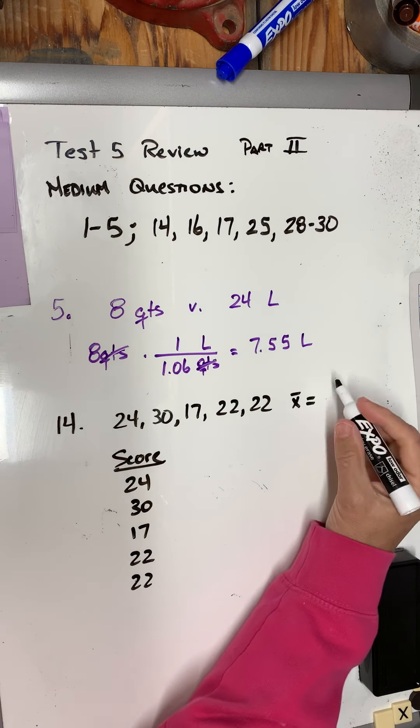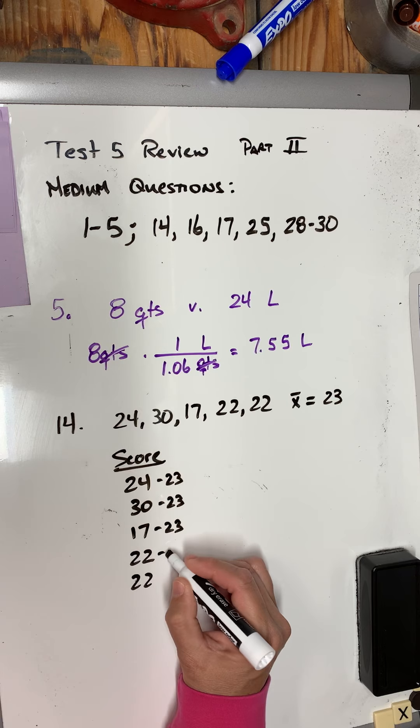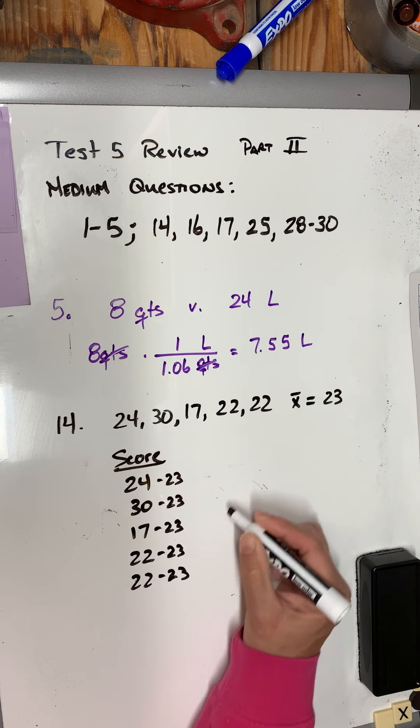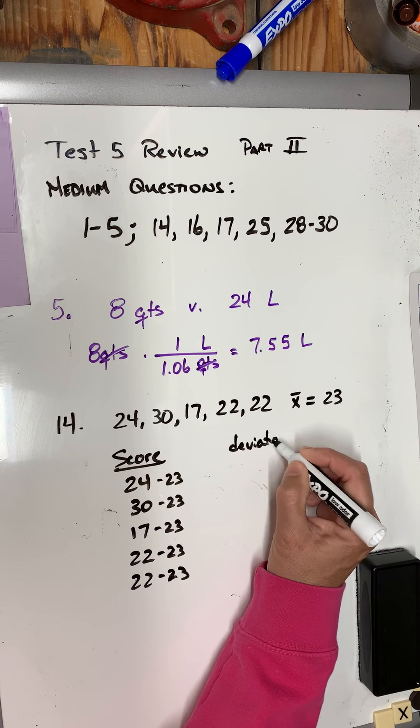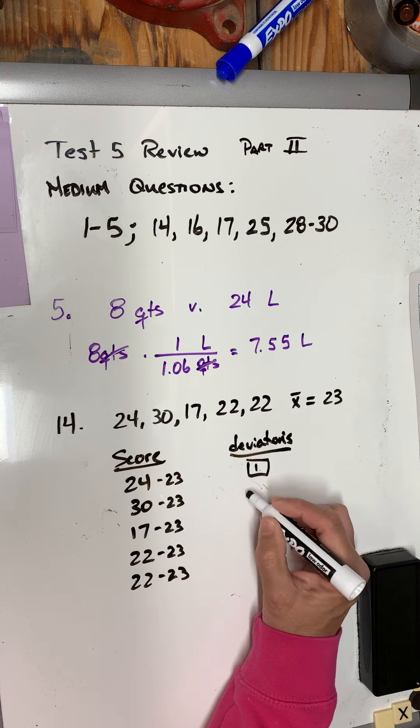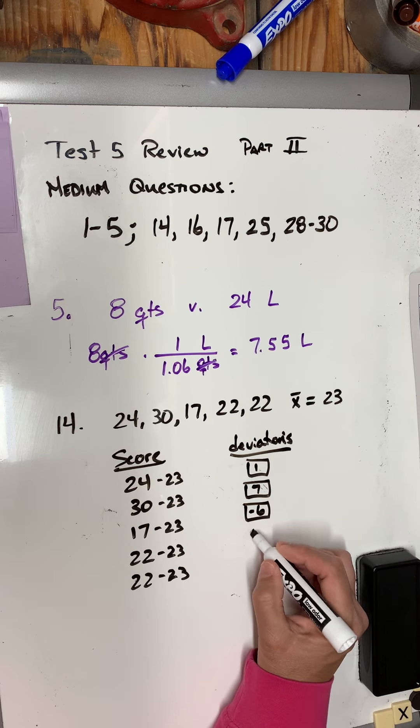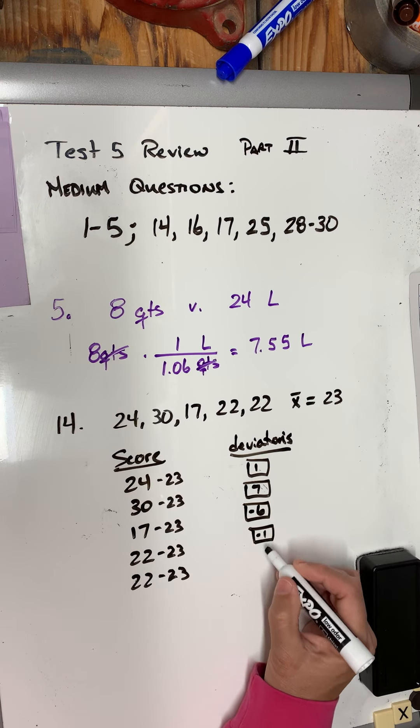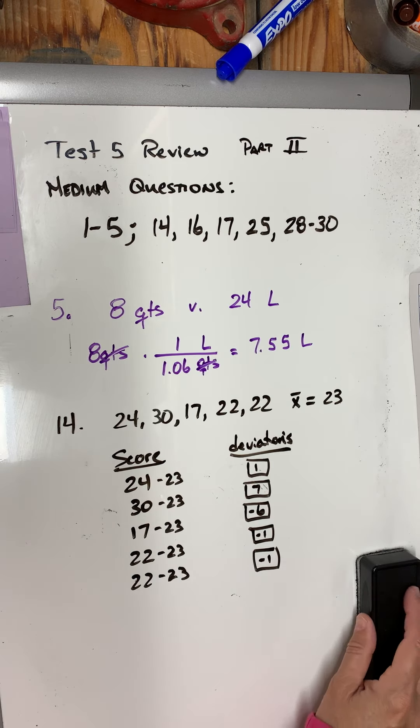So I'm going to subtract 23 from each individual score, and then the deviations that they're asking for will go right here. So this is 1, 30 minus 23 is 7, 17 minus 23 is negative 6, 22 minus 23 is negative 1, and negative 1 again. So those are the answers for that, which isn't too bad—which is why I made it a medium question—but it is a bit lengthy. All right, let's scoot to number 16.